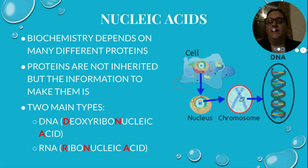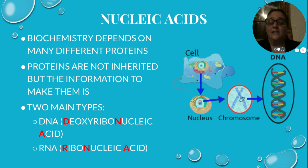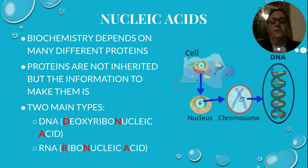So nucleic acids — their makeup, their biochemistry — we talked about carbohydrates having carbon, hydrogen, and oxygen, and we talked about glucose. But in nucleic acids, their biochemistry, what they're made up of, is dependent on many different kinds of proteins, which we'll learn about in a little bit, and on the sequence. So nucleic acids are DNA and RNA — those are the two types — and what's important about these is that they are the sources of making the proteins.